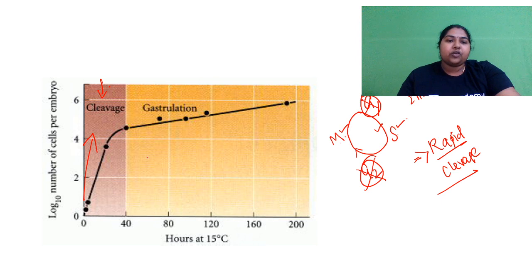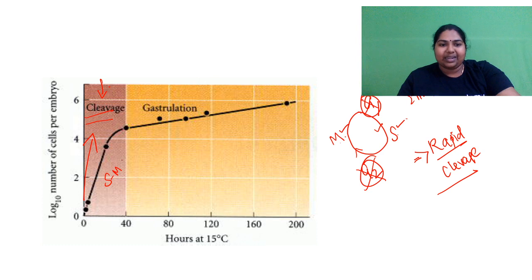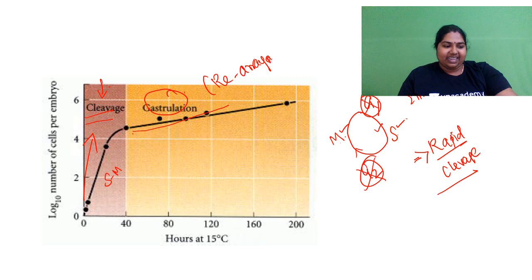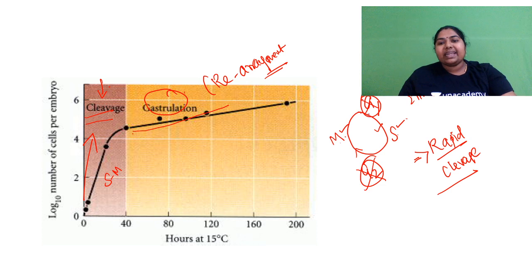So the number of cells is rapidly increasing during cleavage because you have your synthesis and mitosis — mitosis means continuous cell division. The number of cells is going to rapidly increase. But in gastrulation there is not such rapid increase; it is a simple rearrangement of cells. The reason for skipping the gap phase is to save time.